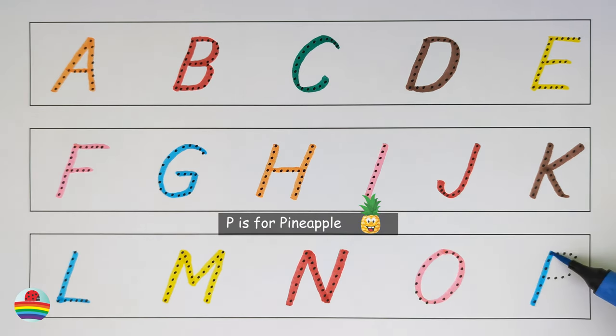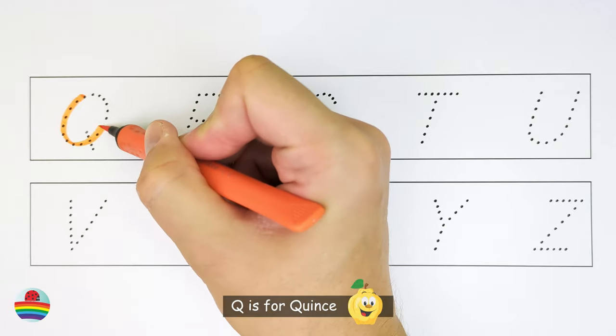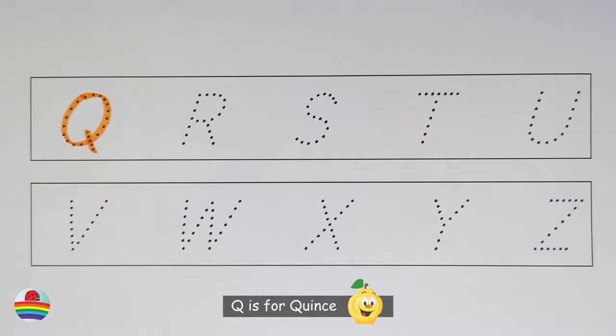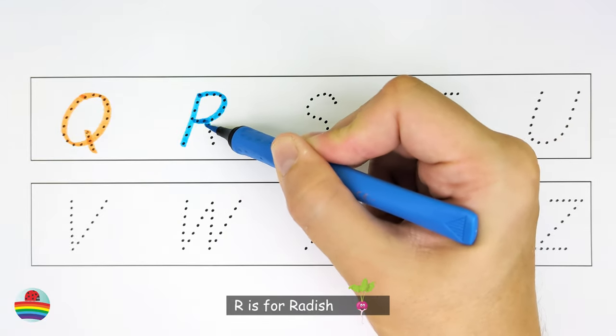P. P is for pineapple. Q. Q is for quince. R. R is for radish.